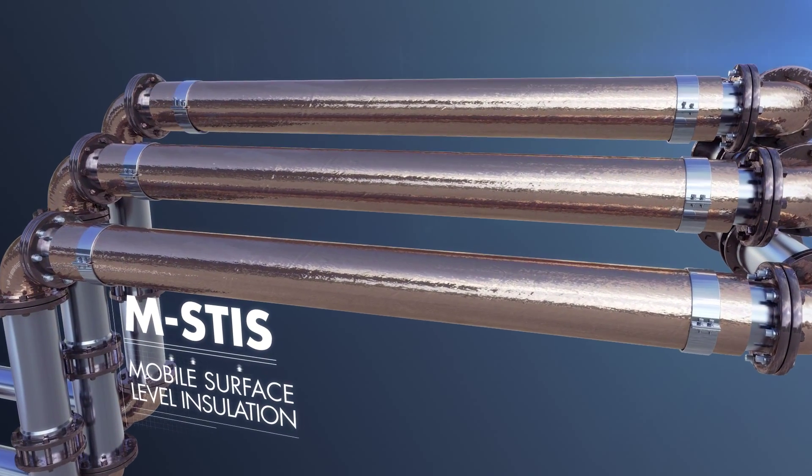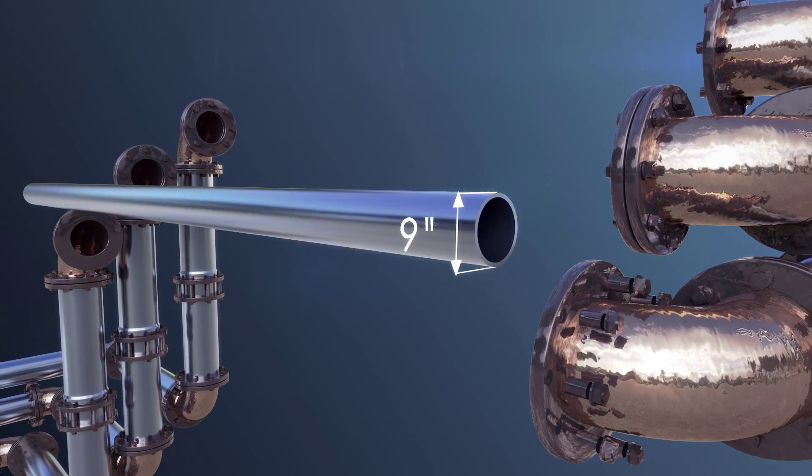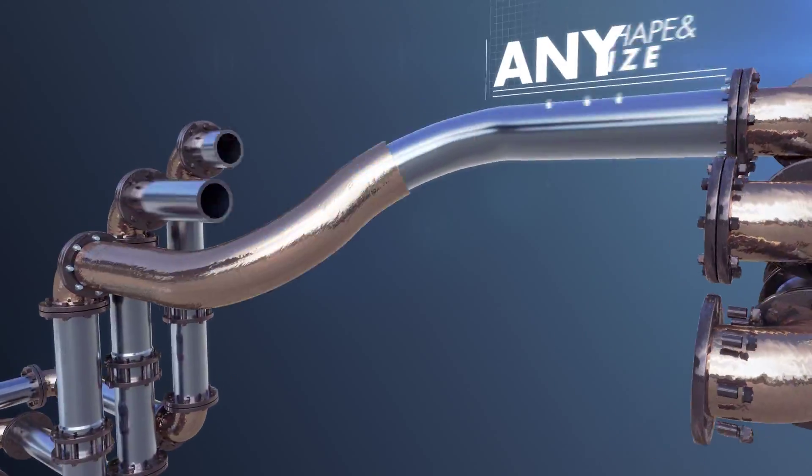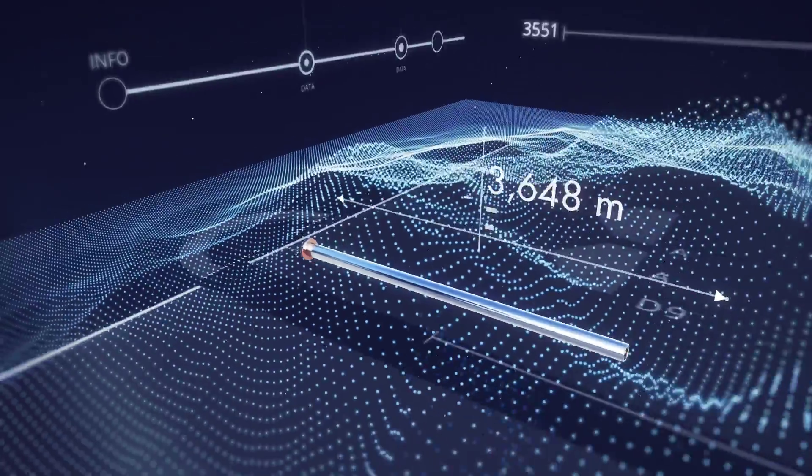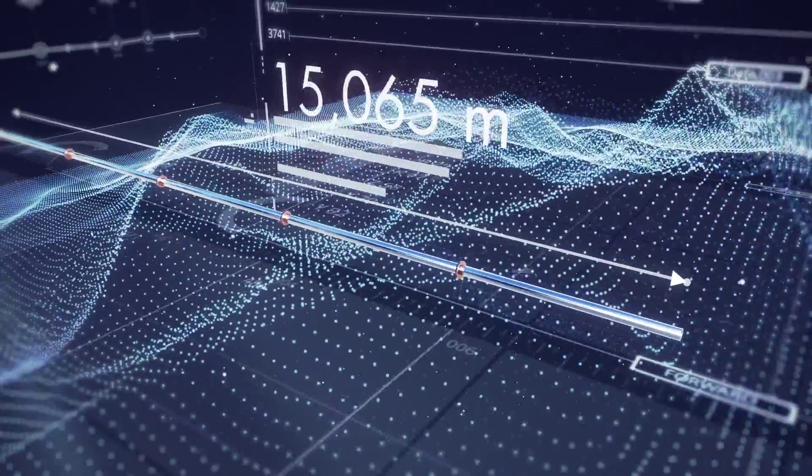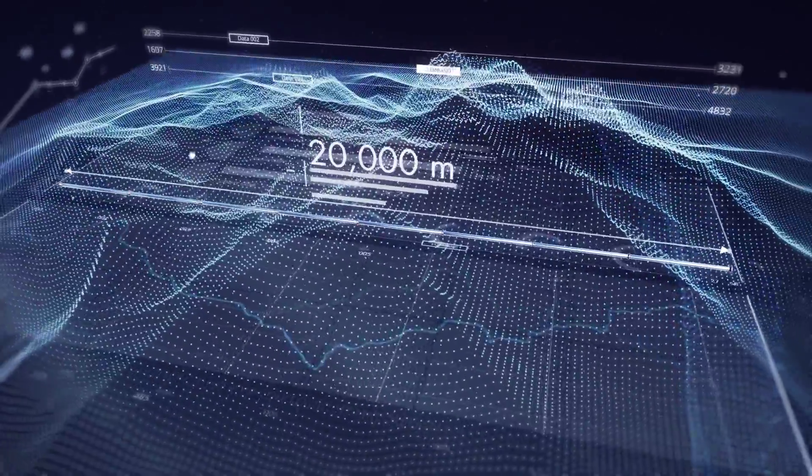That can be retrofitted to existing pipelines. The STIS product and solution range can be made in any size and shape. STIS can even be used and tailored for large steam distribution infrastructure projects of up to 20 kilometers.